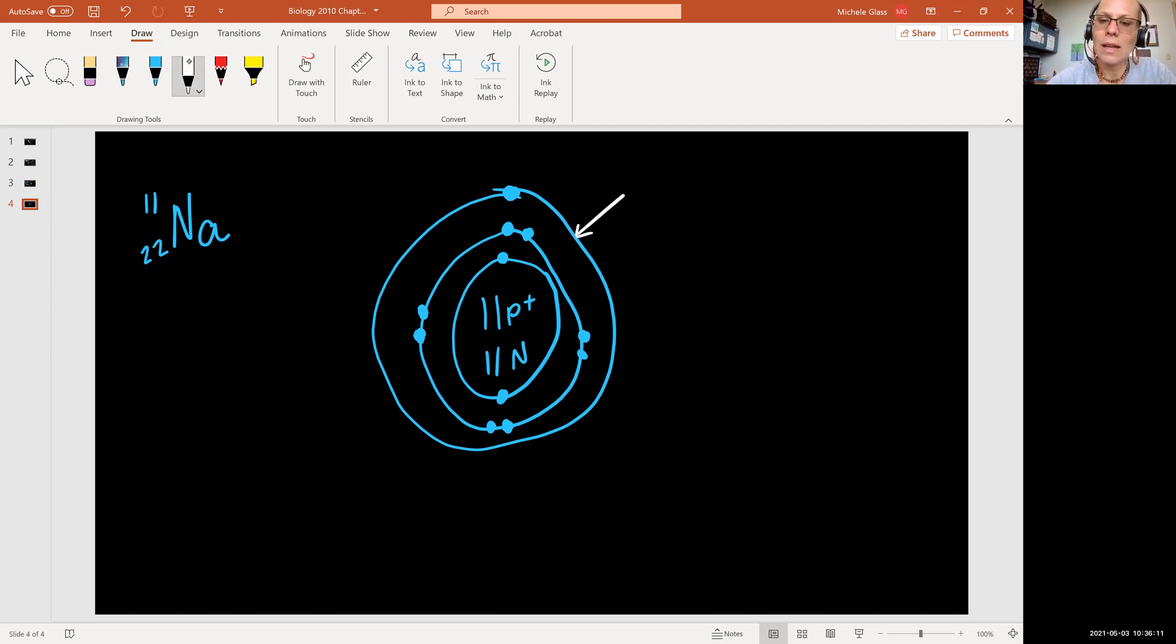This outer shell has a special name called your valence shell. It's always your outermost. So it doesn't matter if you're drawing hydrogen and helium, which have just a single shell. If you're drawing carbon like we did a minute ago and it has two shells. If you're drawing sodium like we've just done and it has three shells or something even bigger, that outermost shell is always called your valence shell. So stay tuned for more information on atomic structure and how we can use that information to help us determine chemical behavior.